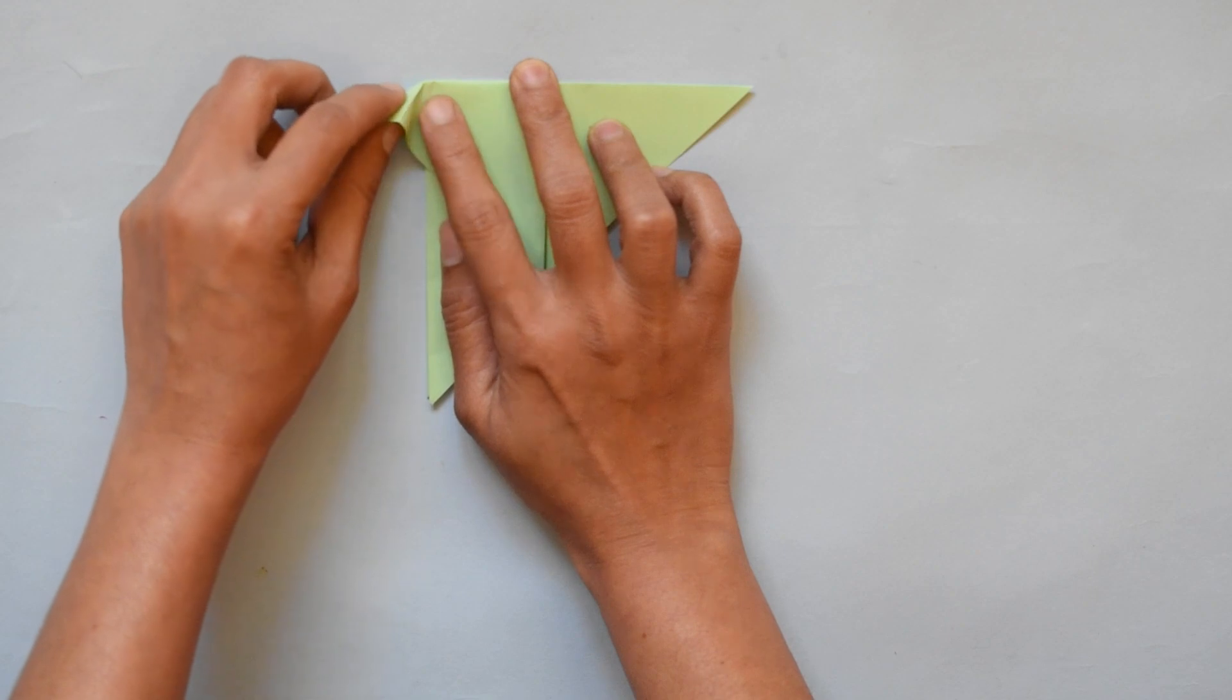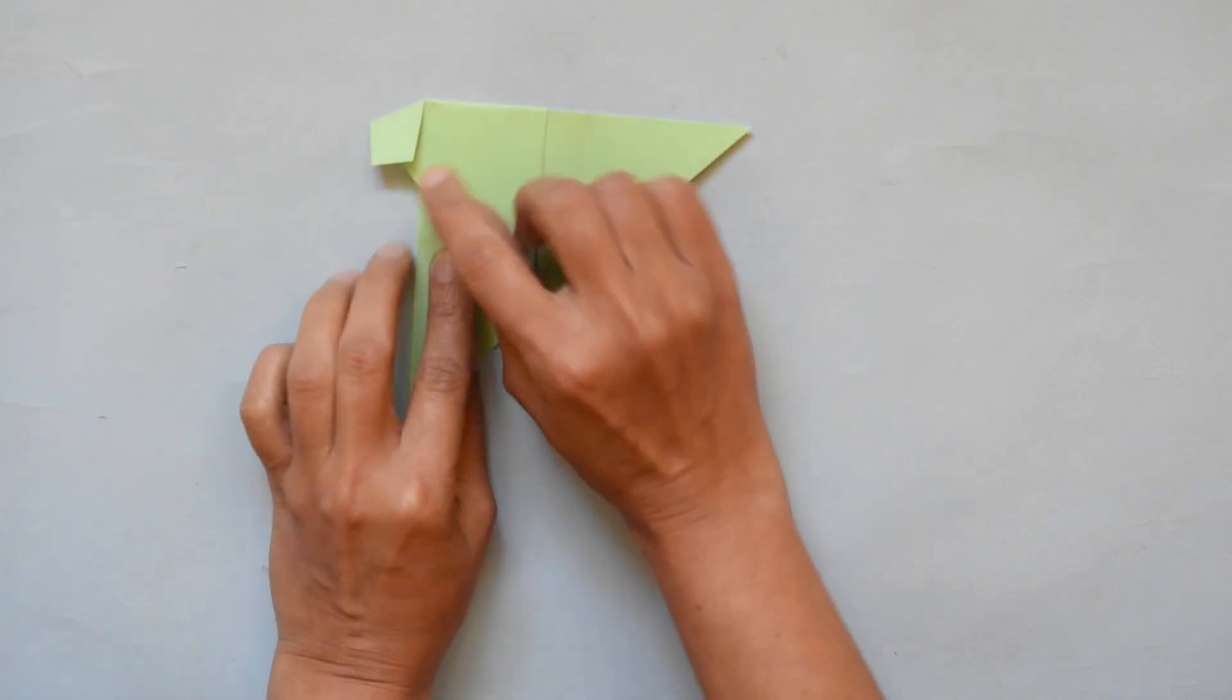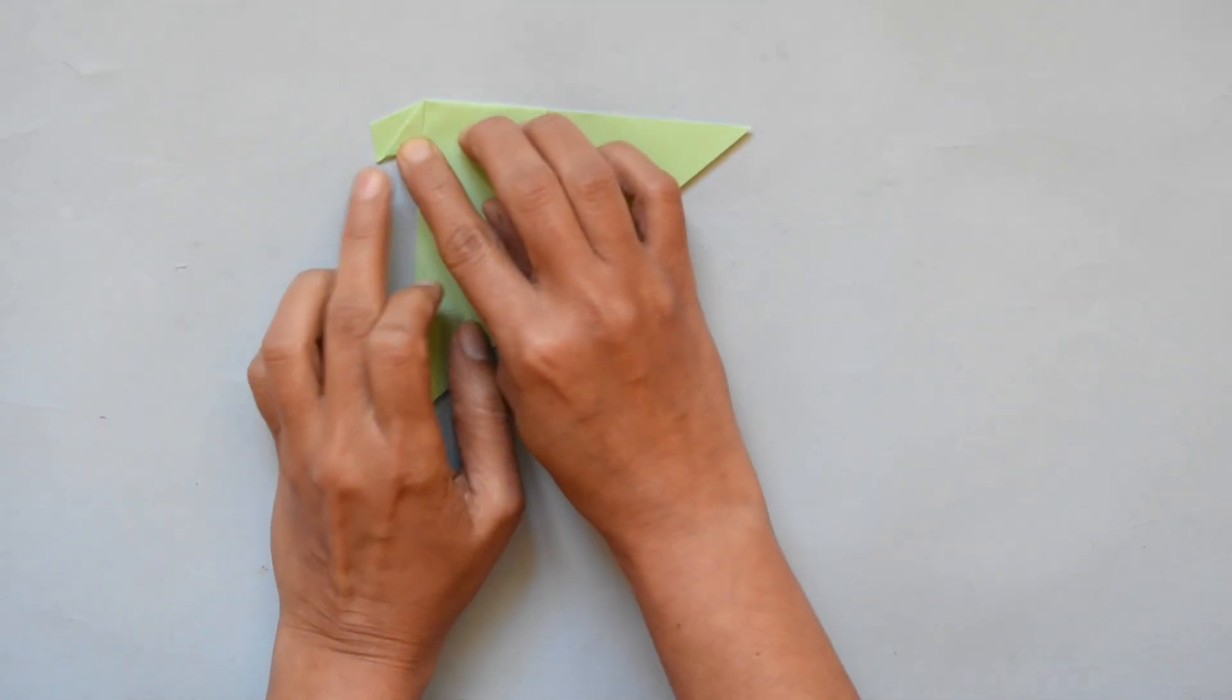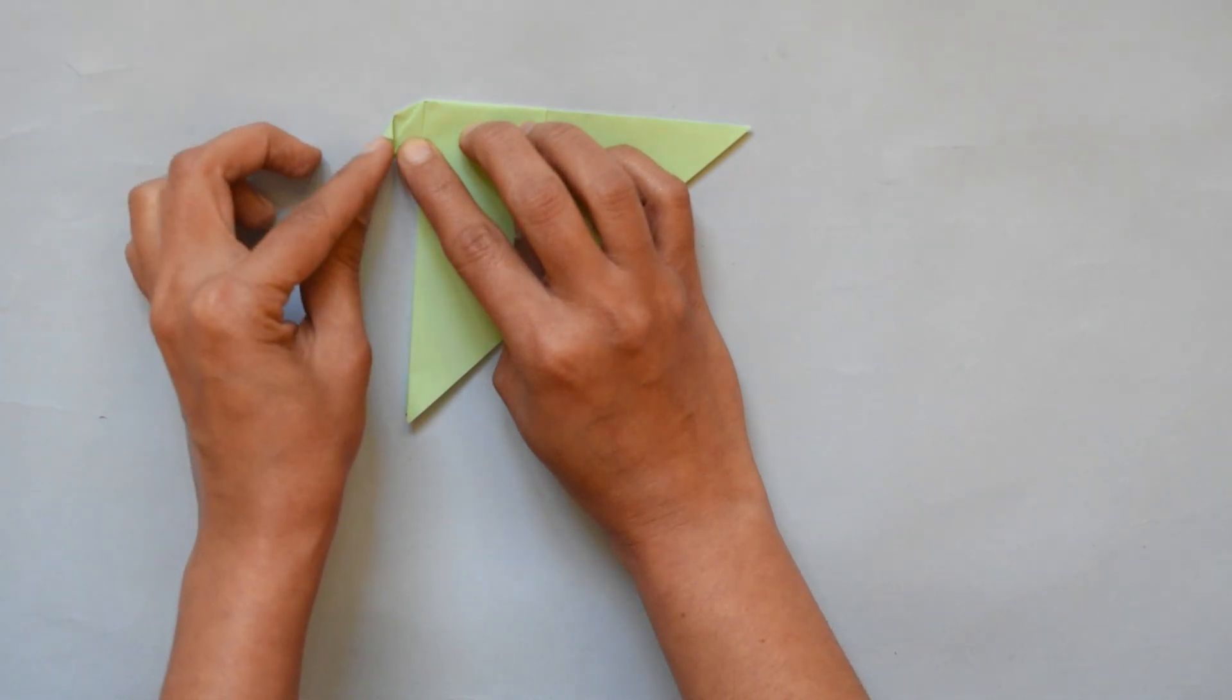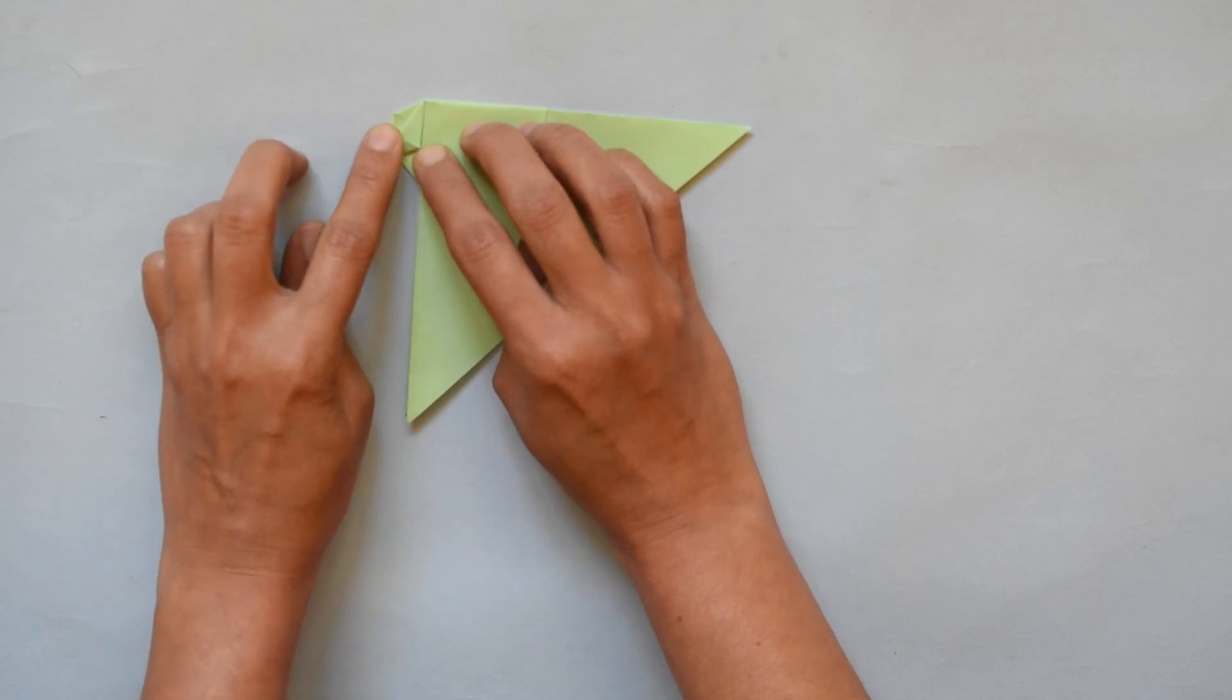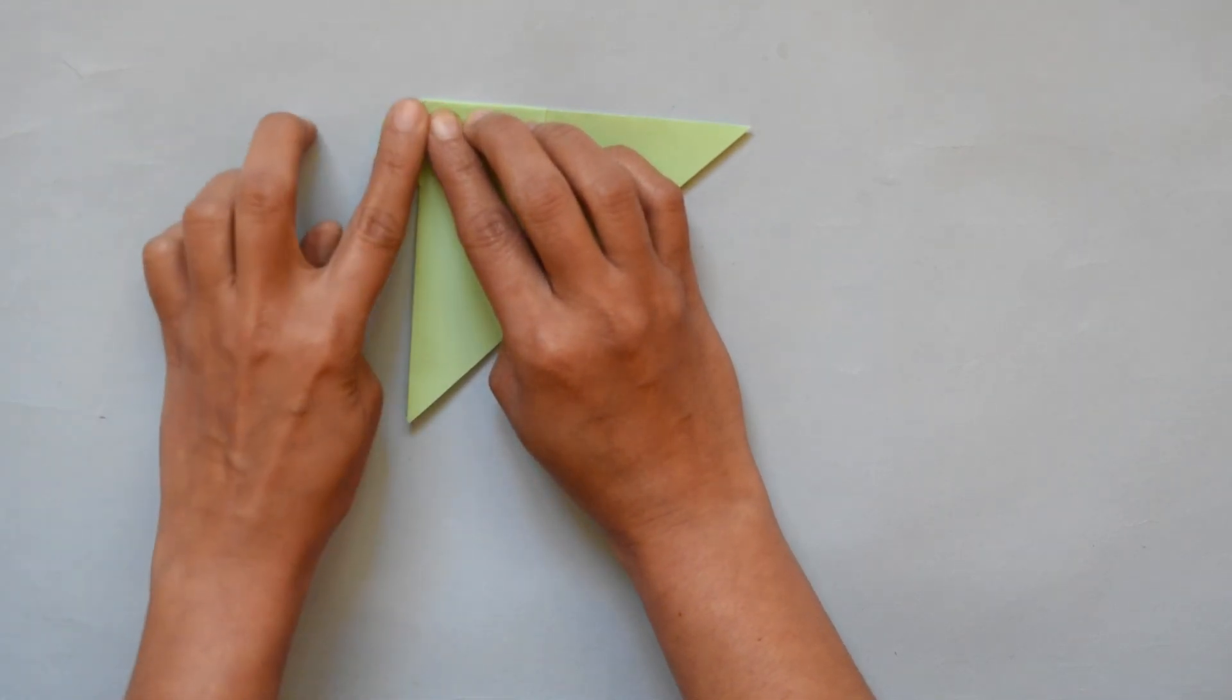Open it. Press like that. Here you get one diamond shape. Now fold the corners. And again fold it in the middle. And here your bird's beak is ready.